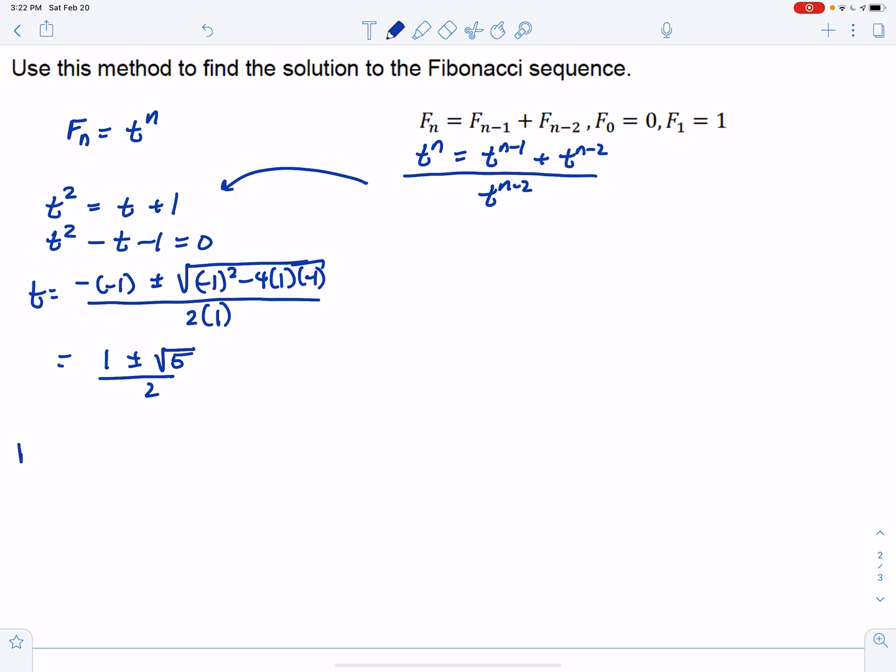So this means that Fn is equal to some constant times the first solution to the n, because remember, again, our solution had the form T to the n, right, plus some other constant times the other solution to the n. So this is getting really interesting here.